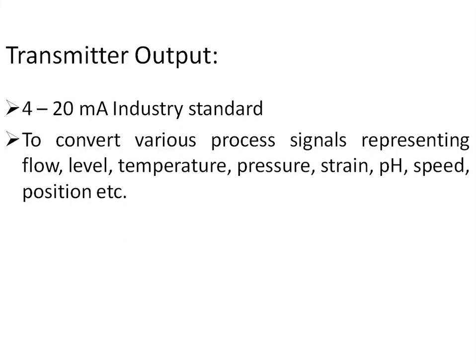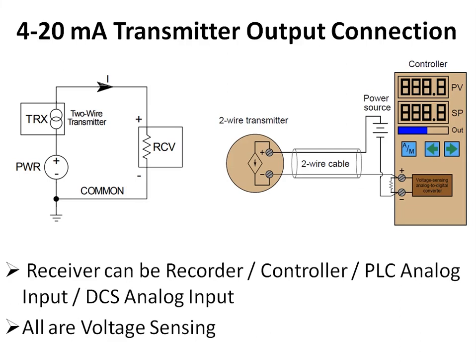The 4 to 20 milliampere transmitter output can be 2-wire, 3-wire, or 4-wire. The transmitted signal is ultimately received by a recorder, controller, or analog input of a PLC or DCS. As seen in the controller figure, the 4 to 20 milliampere signal is converted to a voltage using a resistor, because controllers, recorders, and analog inputs are all voltage-sensing devices.